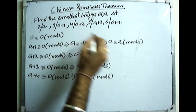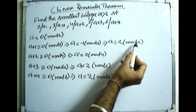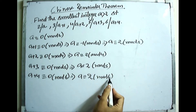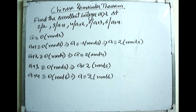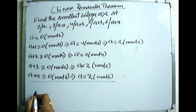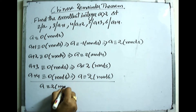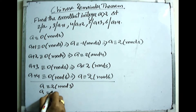We now have a system of 5 congruences, but n1=2, n2=3, n3=4, n4=5, n5=6 are not relatively prime. So we must first reduce this system to a subsystem satisfying all conditions of the Chinese Remainder Theorem. That subsystem is: a ≡ 2 mod 3 and a ≡ 2 mod 4.